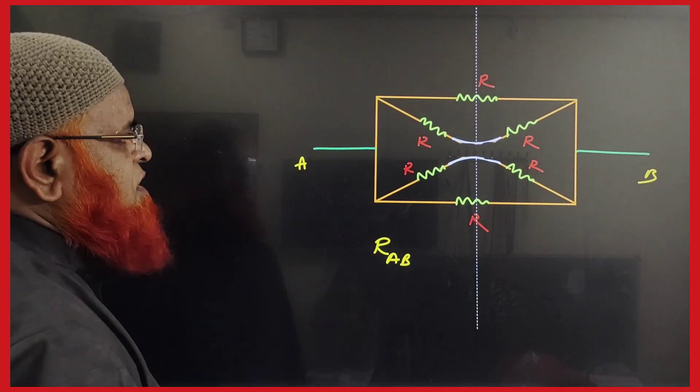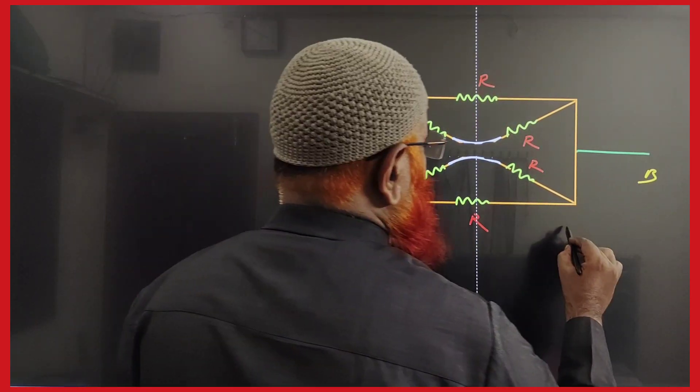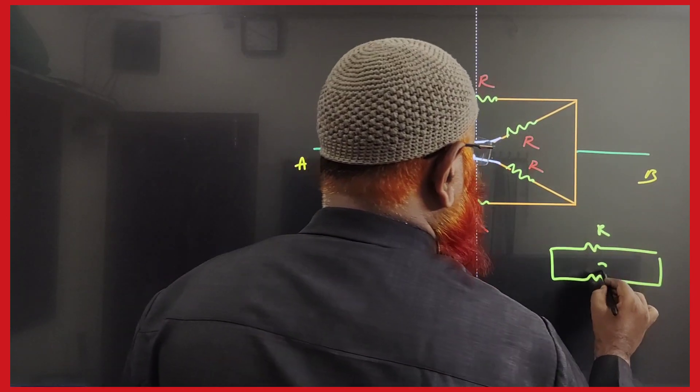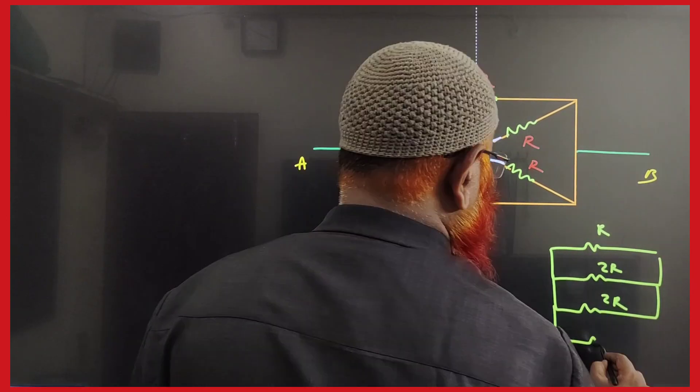What are you going to solve here? You can convert this into one circuit. Now this is converted like this: one resistance R, these two taken as 2R, again in the middle 2R, and again at the last.